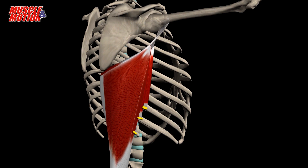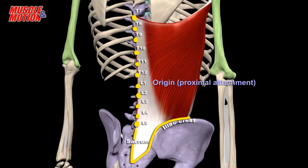Additional variations in its anatomy — meaning this variant occurs in only part of the population — include an origin from the inferior angle of the scapula. Lastly, the Latissimus also originates, proximal attachments, from the thoracolumbar fascia.